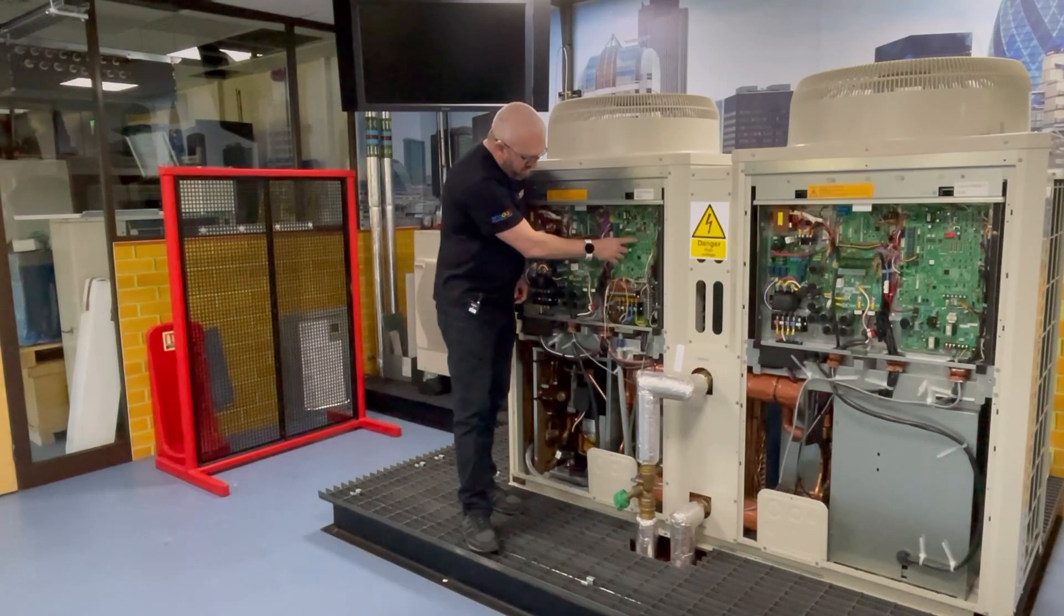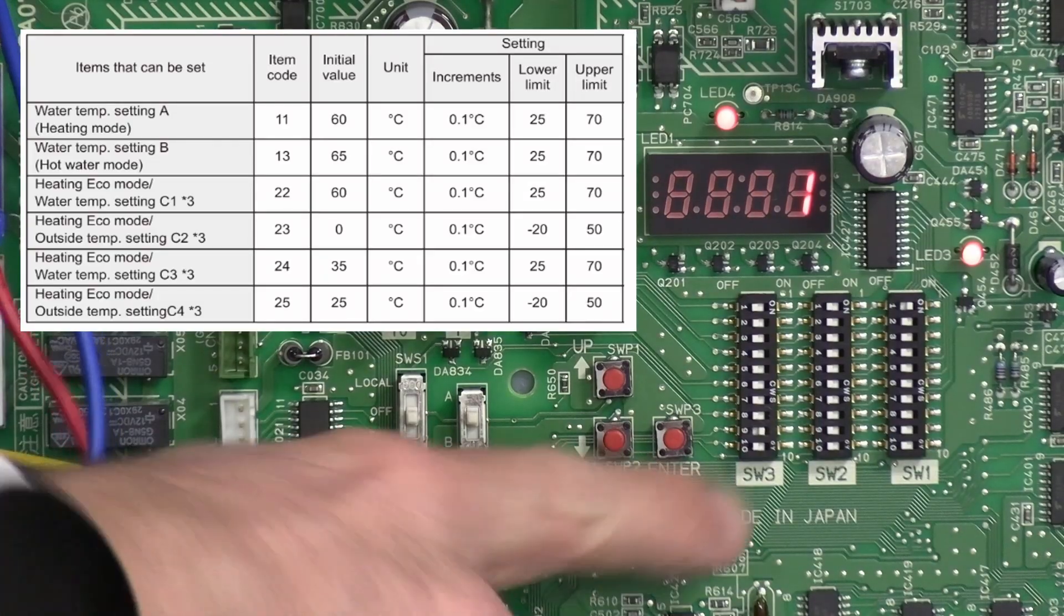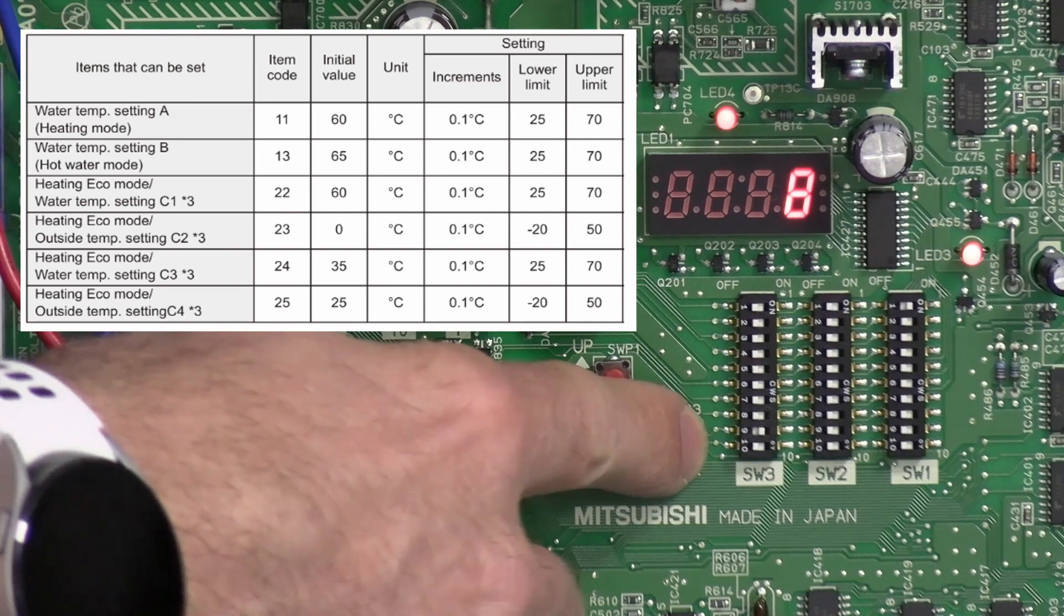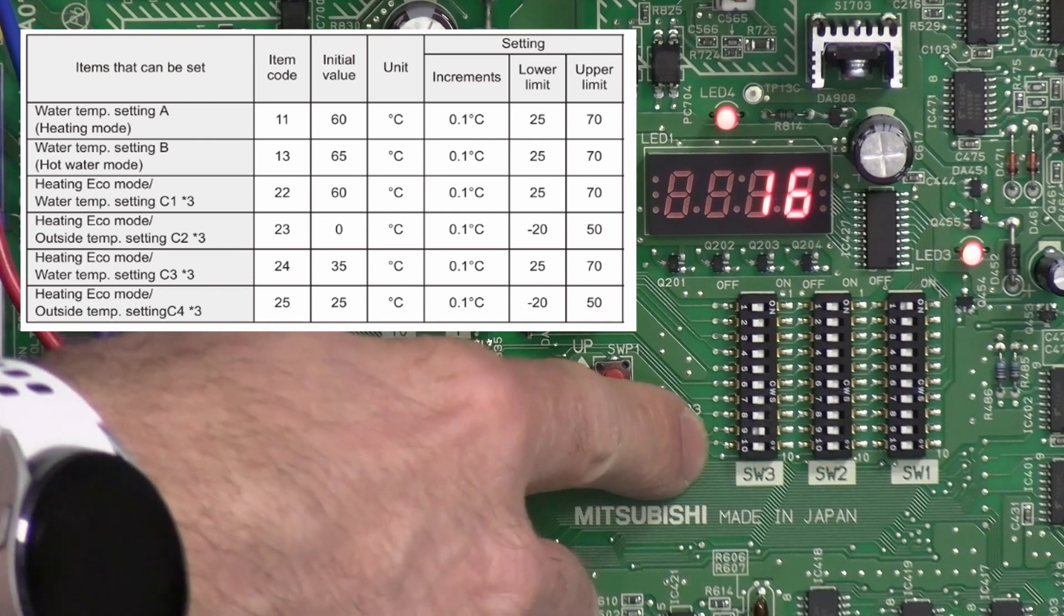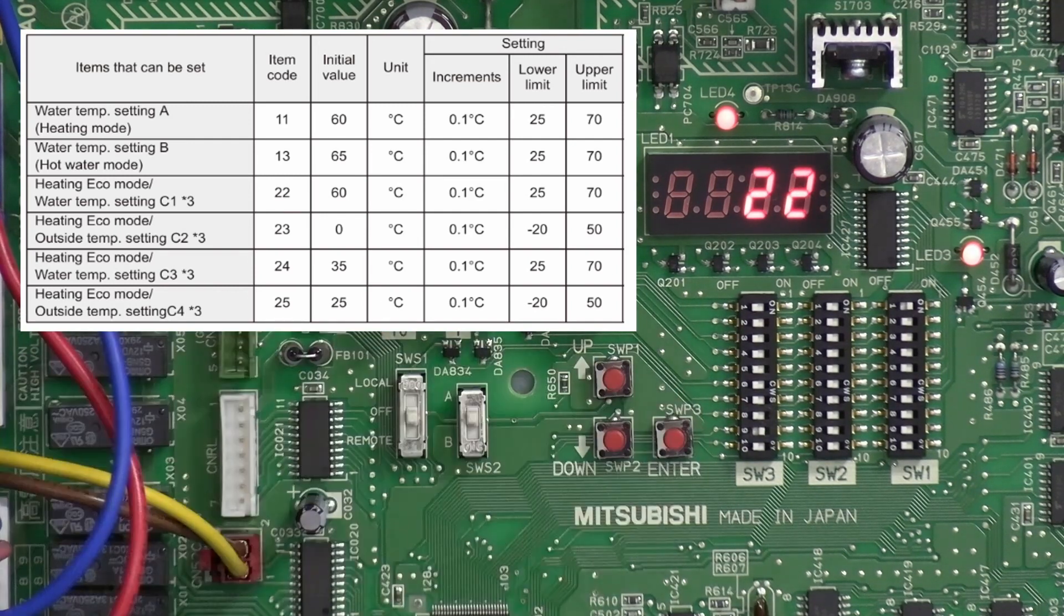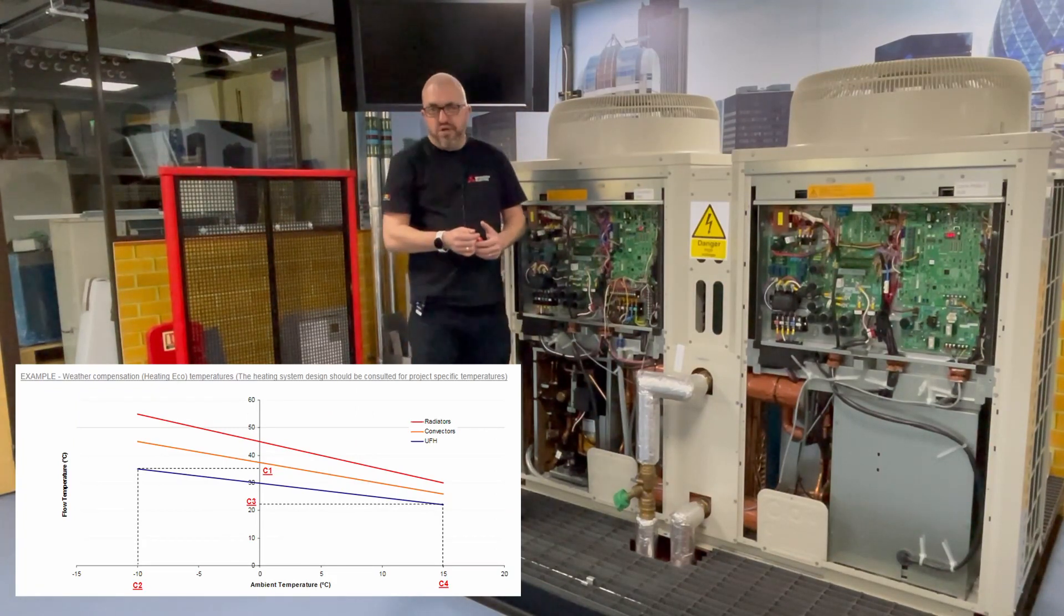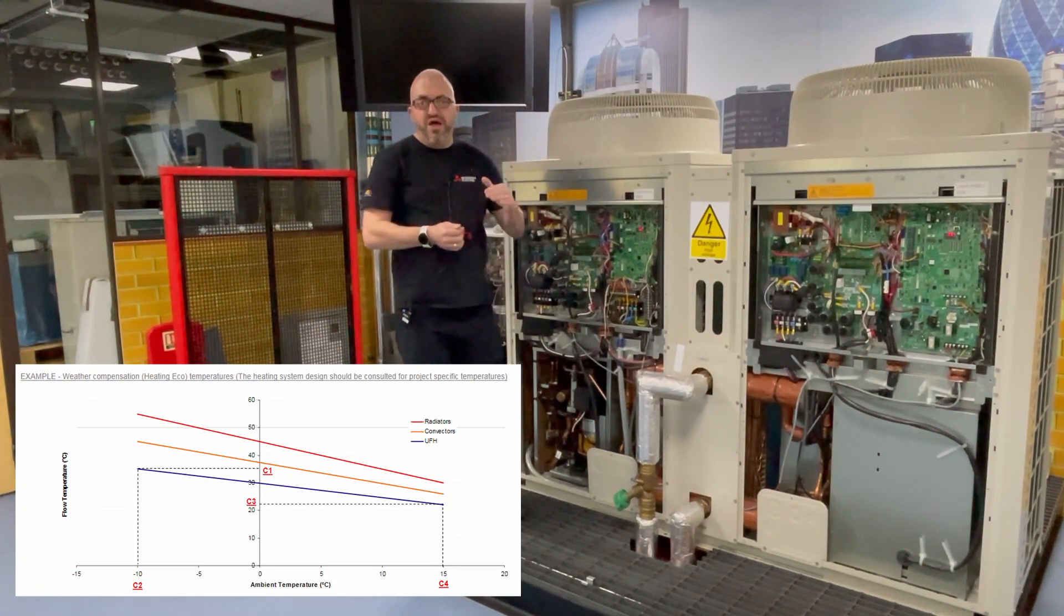We're now going to use a select switch here, and each time you press it it moves through the operation numbers. Now the first one we want is item 22, so 22 is going to be our high end of the scale, the highest flow temperature the system will aim for.